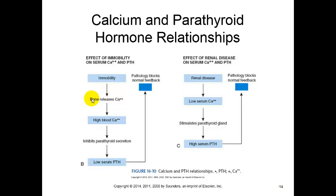High blood calcium levels inhibit parathyroid hormone. Low parathyroid hormone will never go back up because of the immobility - we will never get the amount of parathyroid hormone we actually need for bone deposition.